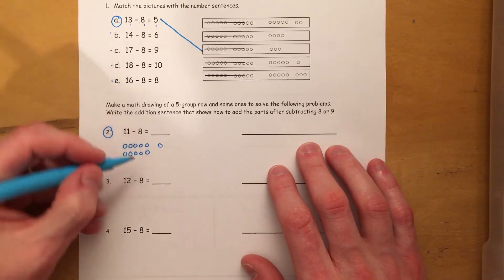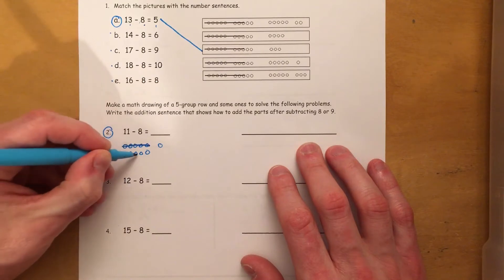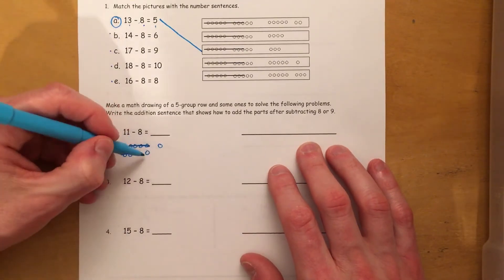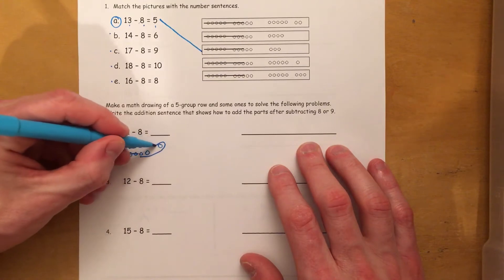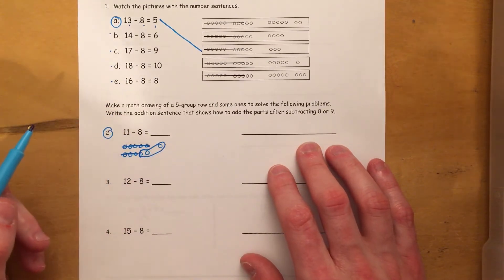Then I need to cross out 8. So 1, 2, 3, 4, 5, 6, 7, and 8. And I see that I'm left with 2 and 1.